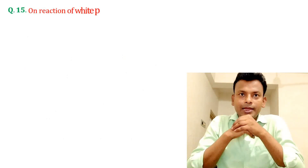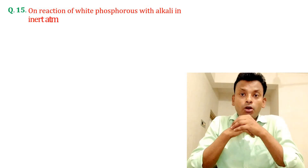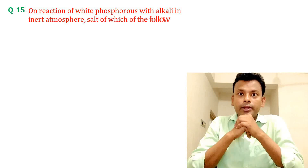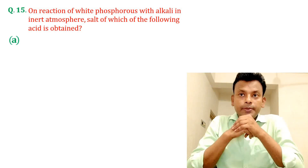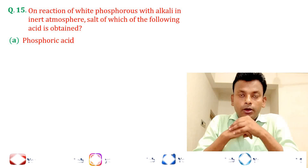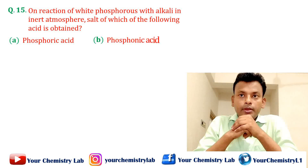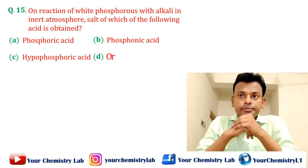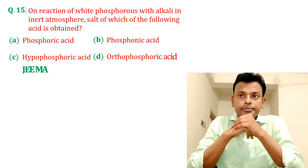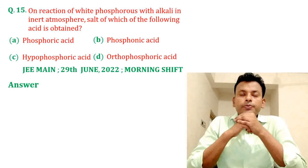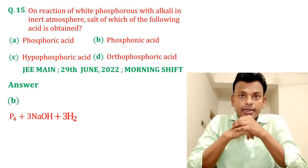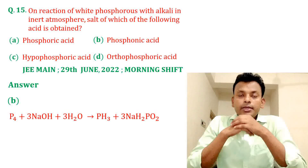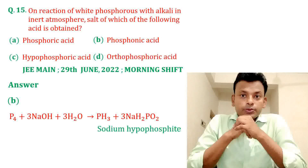Question number fifteen: on reaction of white phosphorus with alkali in an inert atmosphere, a salt of which of the following acid is obtained? Options A, B, C, and D are given. Answer: option B is correct. The product is sodium hypophosphite, also called phosphonic acid.